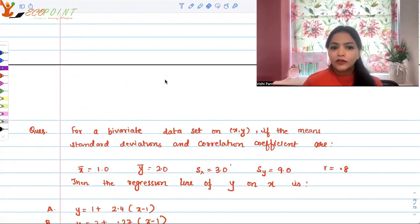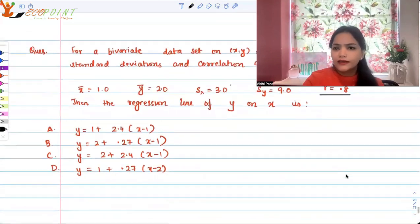The first question goes like this: for a bivariate data set on x, y, if the means of x and y, standard deviations, and correlation coefficients are given as x bar is 1, y bar is 2, standard deviations are 3 and 9 respectively for x and y, and correlation coefficient r is 0.8, find the regression line of y on x.